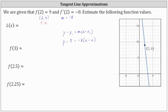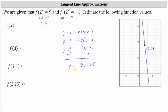Now let's solve for y. Distributing negative 8 we have y minus 9 equals negative 8x plus 16. Adding 9 to both sides and simplifying, we have y equals negative 8x plus 25. We'll call the tangent line L of x the linear approximation for f of x, which gives us L of x equals negative 8x plus 25.